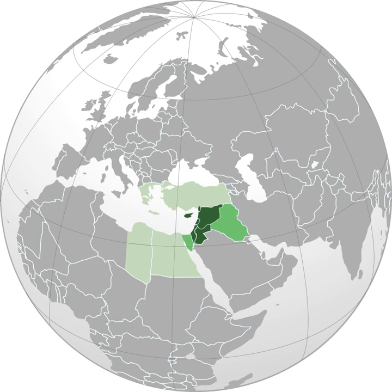The largest religious group in the Levant are the Muslims, and the largest cultural-linguistic group are Arabs, due to the Muslim conquest of the Levant in the 7th century and subsequent Arabization of the region. Other large ethnic groups in the Levant include Jews, Kurds, Turkmen, Assyrians, and Armenians. The majority of Muslim Levantines are Sunni, Alawi, or Shia Muslim.